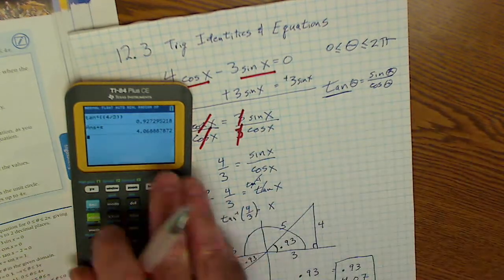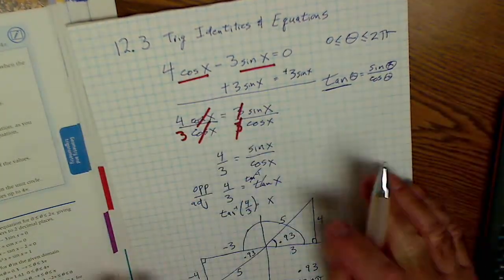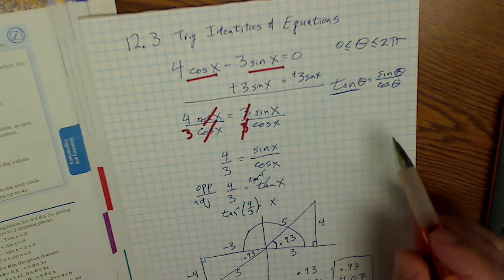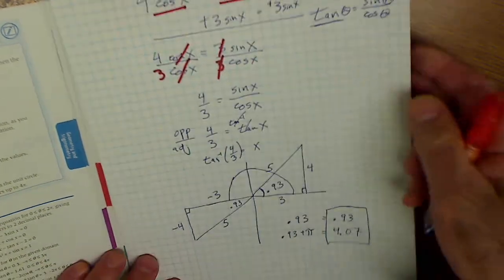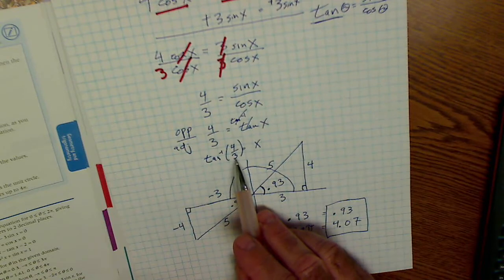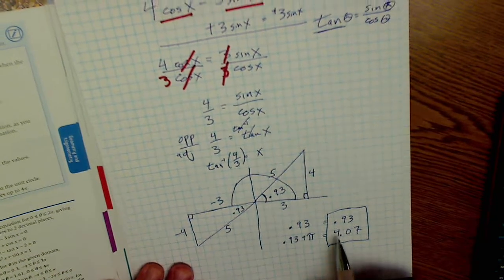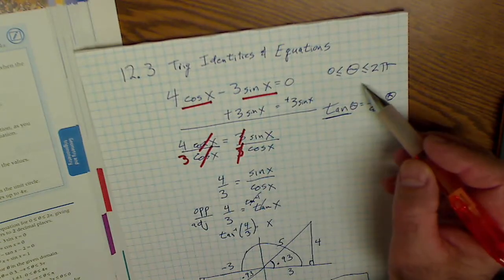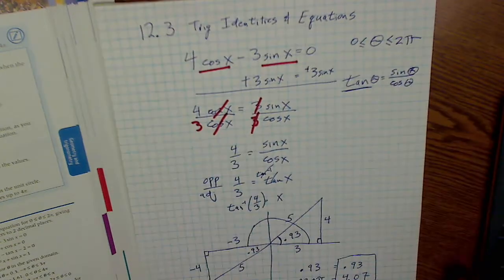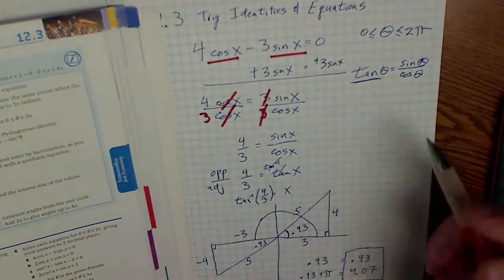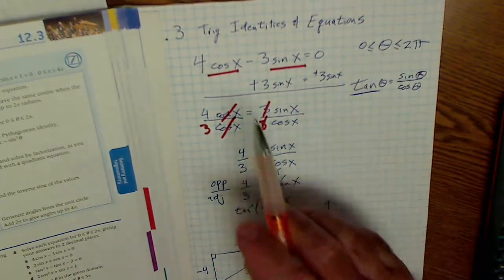All right, hopefully that helped on that problem. It's a little bit tricky. There's a lot of pieces put together: algebra skills, trig skills, identity, solving equations, knowing the fact that given a dependent variable of ratio size, there's an infinite series of solutions, and then cutting that off with a domain. So this is Jonathan at Colfax Math. I'm going over trig identities and equations, how to solve this one problem.